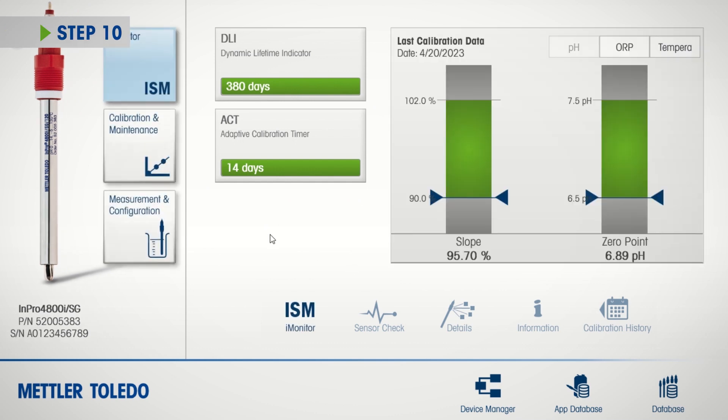Any anomalies in the sensor health will appear as a yellow or red vertical bar. To see specific issues, click on the Details icon.